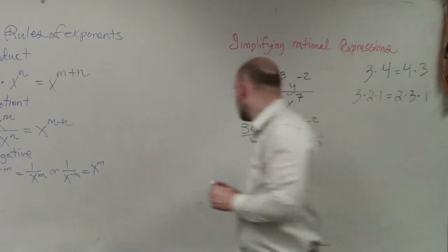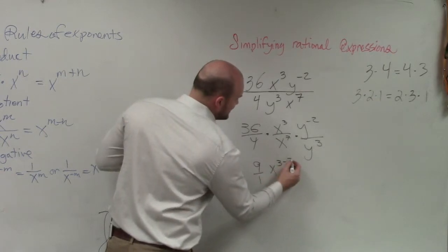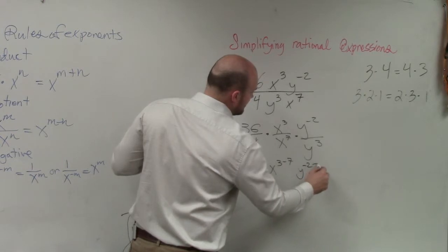OK? So now, x cubed divided by x to the 7th is x to the 3 minus 7. And here I have y to the negative 2nd minus 3.